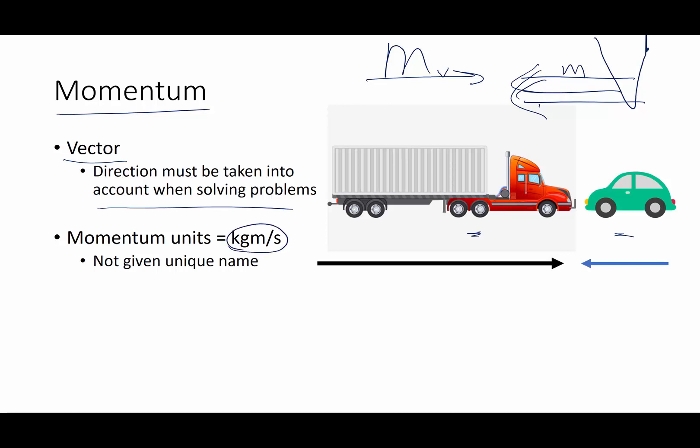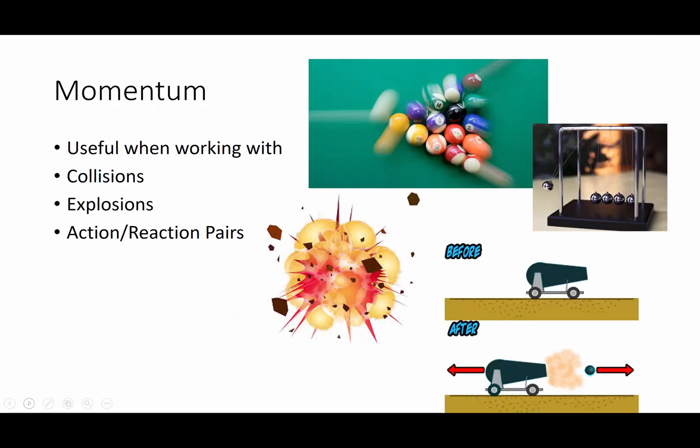Momentum units do not have a unique name. We are used to newtons being kilogram meters per second squared. A joule is a kilogram meters squared per second squared. And momentum units, that's it. And this is a first indicator of the fact that momentum is not one of those big laws of science. It is a principle. And what does that mean? It means that it is useful in only very specific situations, not universally.